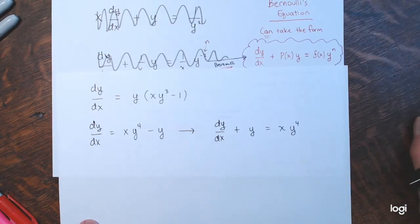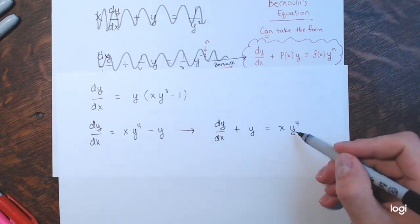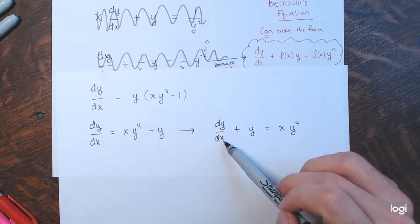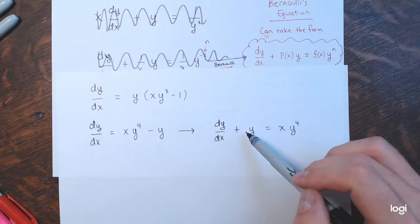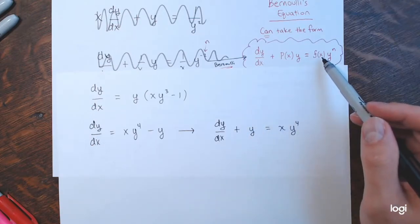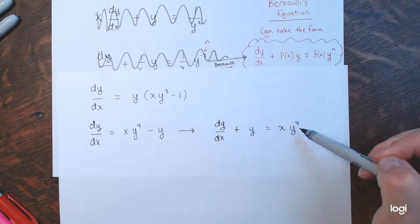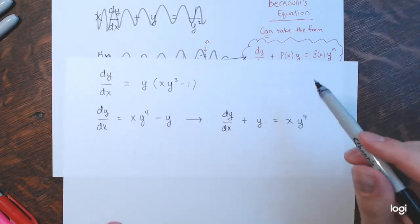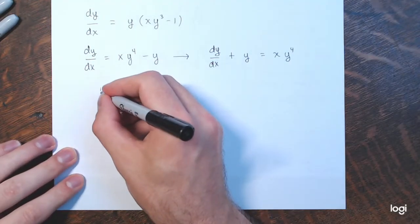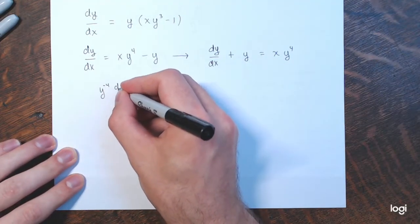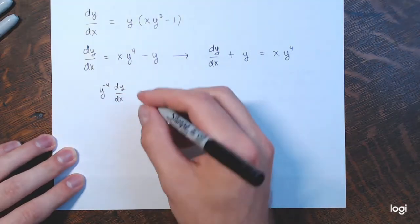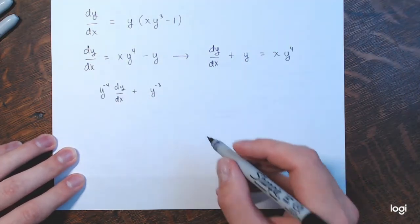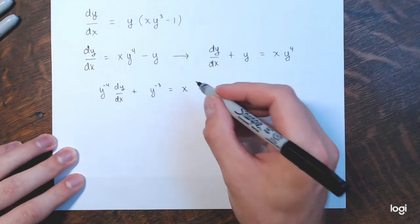You can see how this has the first derivative of y plus P(x) = 1 times y, equals F(x) = x times y to the fourth — so n = 4 here. Dividing through by y to the fourth: y^(−4) dy/dx plus y^(−3) equals x. Now I substitute for y to the negative third.